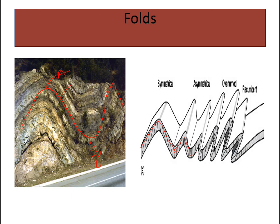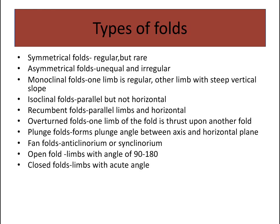Symmetrical folds have both limbs in the same shape. Asymmetrical folds do not have the same shape on both sides. Types of folds: symmetrical folds are regular but very rare to see. Asymmetrical folds are unequal and irregular. Monoclinal folds — 'mono' means one — have only one limb that is regular; the other limb is steep and vertical.